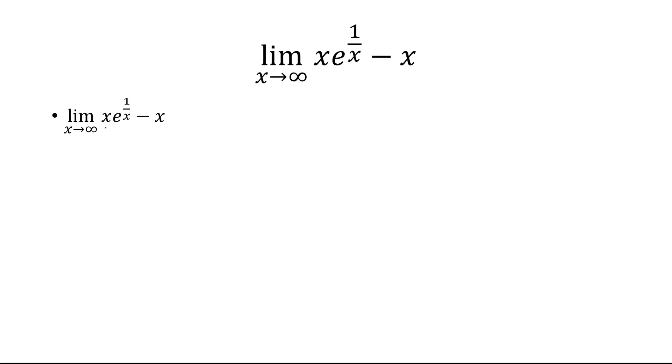The first step is to factor out the x from both terms. So we have x times quantity e to 1 over x minus 1. And now as x approaches positive infinity, we have infinity times 0.